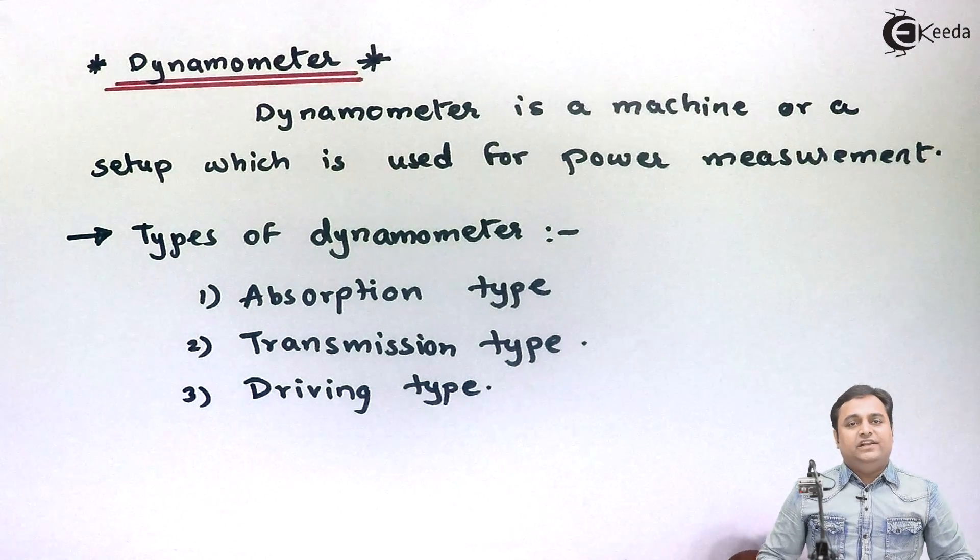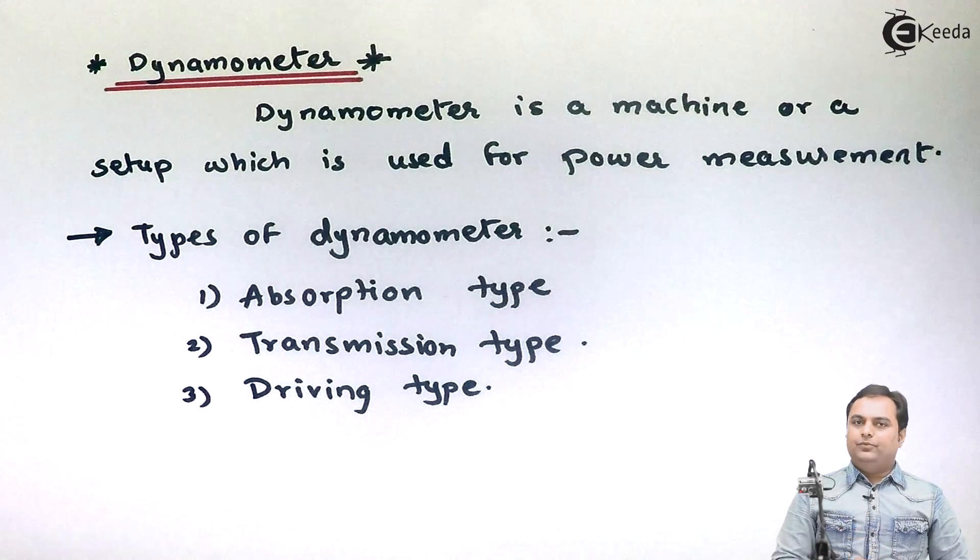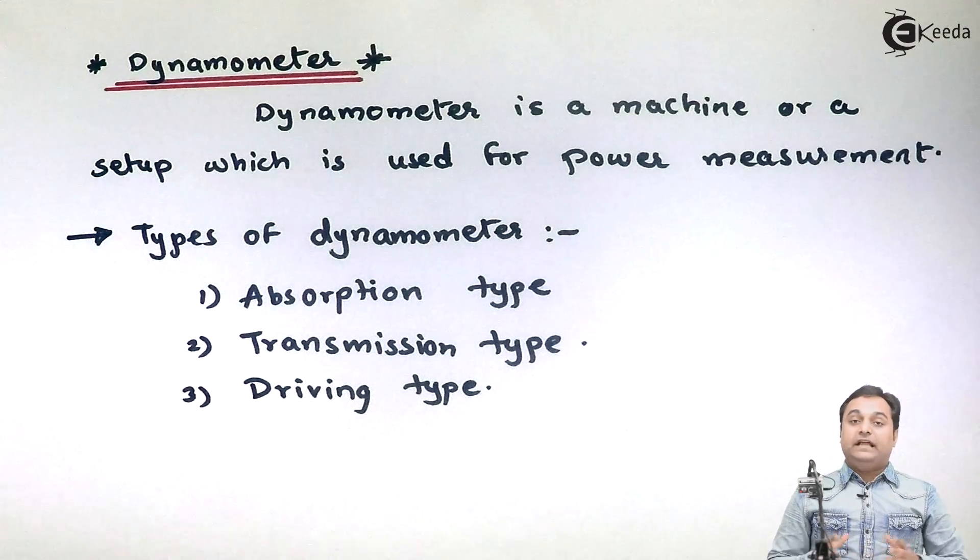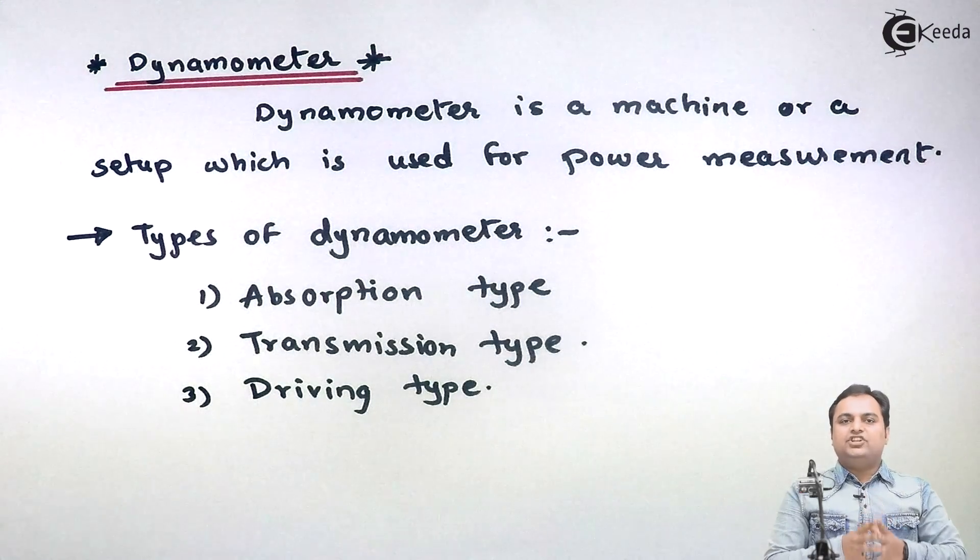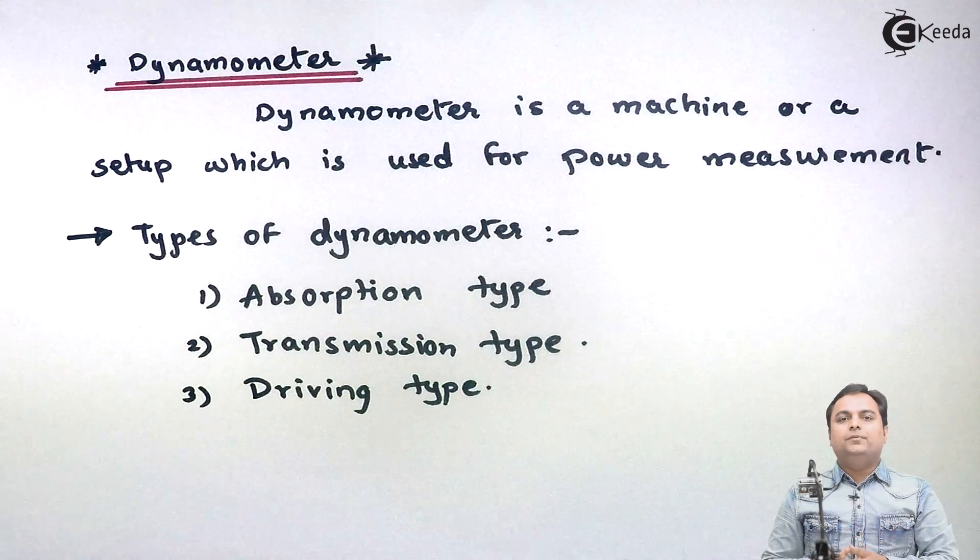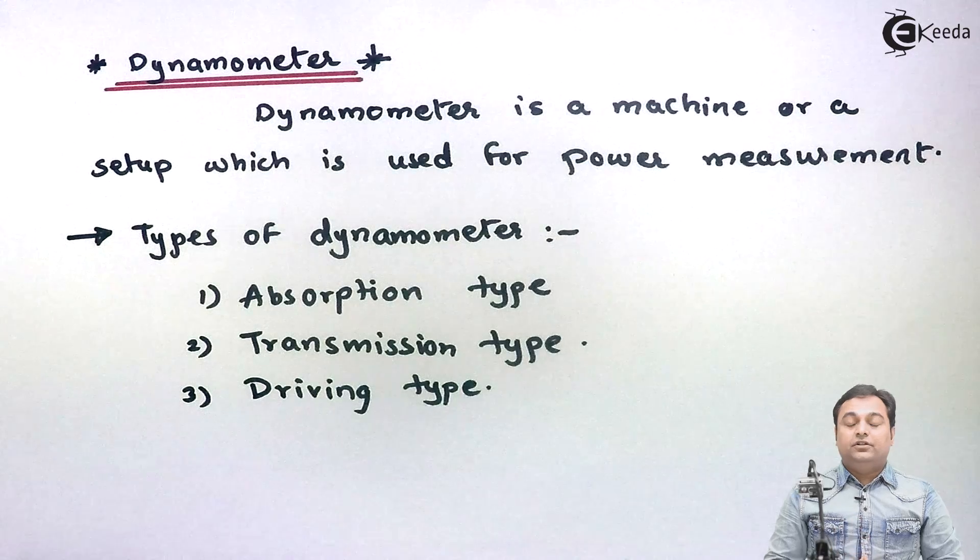In this video, I will help you understand what is a dynamometer and what are the types of dynamometers. Basically, a dynamometer is a machine which is used to measure power or torque of a rotating shaft.